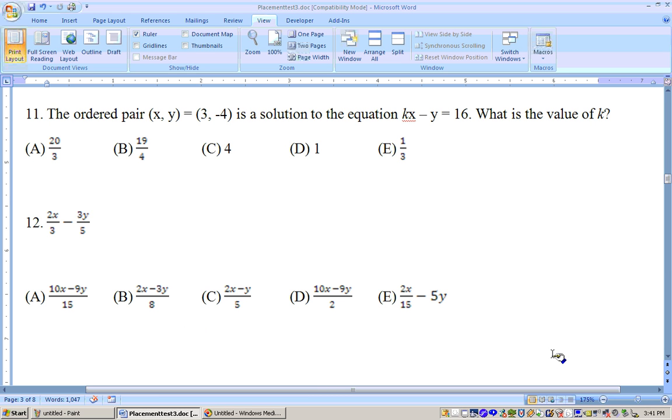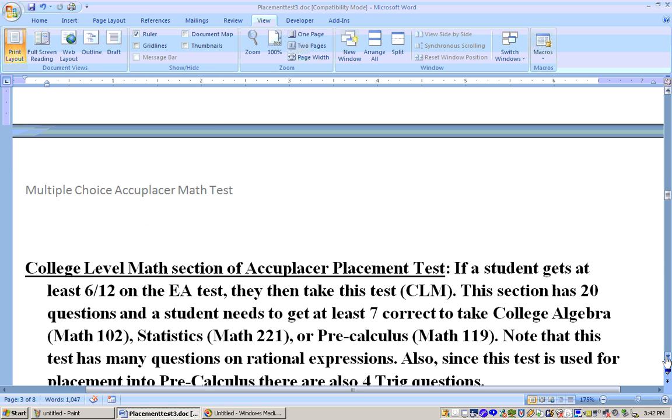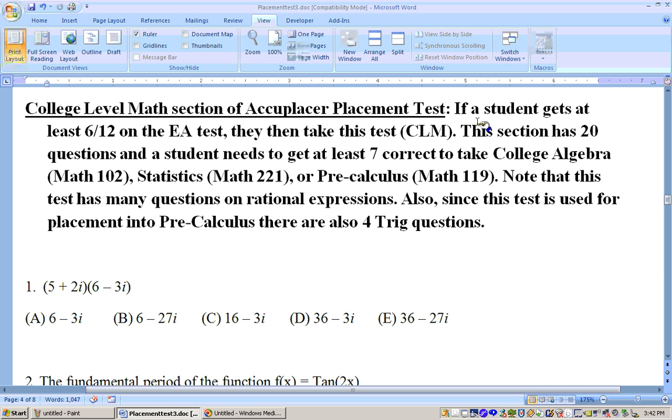And that's all the questions that you'll get on the elementary algebra section of the test is 12 questions. And if you get about 6 of those right or maybe 7 of those right, you'll move on to the CLM section, the college level math section. But if you do get 6 or 7 right on the previous section, then you'll at least qualify for math 93 or 105. And if you can get the same amount on this test correct, you'll qualify for math 102 and math 119. And at a higher level, getting more correct, will qualify you for math 120, which is pre-calculus 2 or maybe even calculus. But to qualify for math 102, you'll need to get about 7 of these correct. Now there's 20 questions on this section, and we'll hit this on the next video.